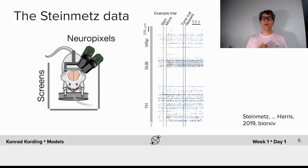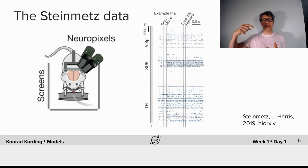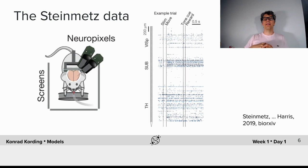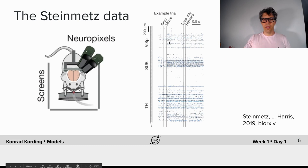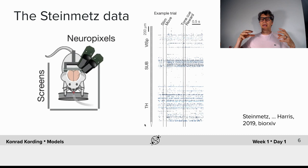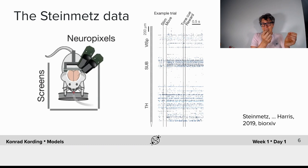In the paper where the dataset is from, they use Neuropixels — one of the new approaches where a single electrode goes into the brain with lots of small electrical contacts along that one mechanical device. On the right-hand side we can see the electrode, and every row represents the activity at one channel, which in first-order approximation may correspond to one neuron. So while the animal is doing behavior and seeing things, we can observe the activity of a very large number of neurons and ask questions about it.